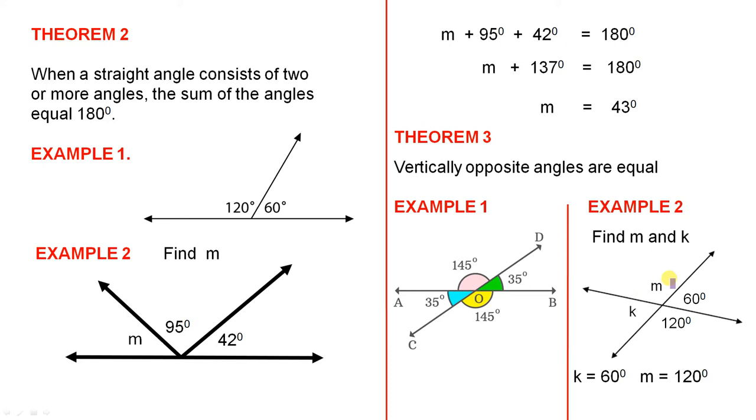Knowing theorem 3, we can find these two unknown angles, so find M and K. If that is 60, this is vertically opposite to the 60, so K must be 60 degrees. If that's 120, M is vertically opposite to 120, so M must be 120 degrees.